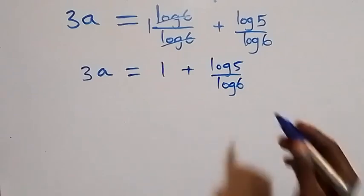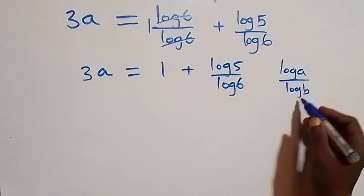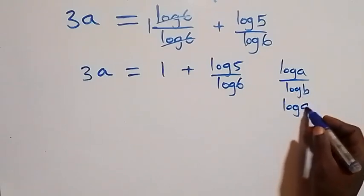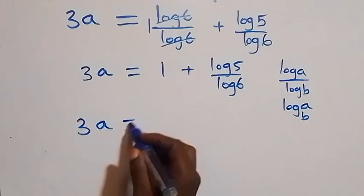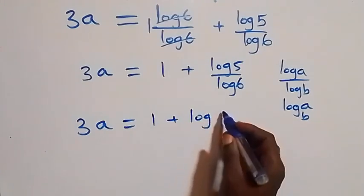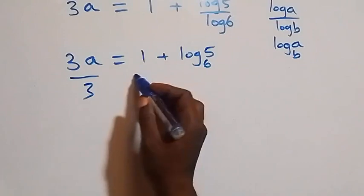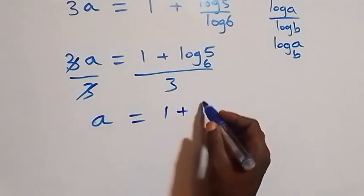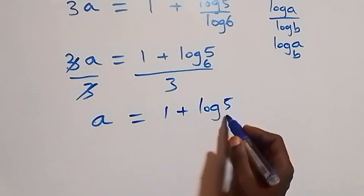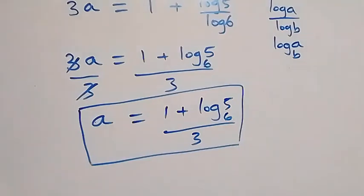By the change of base formula, log(5)/log(6) = log₆(5). So we have 3a = 1 + log₆(5). Dividing both sides by 3, we get a = (1 + log₆(5)) / 3. This is the solution to the given problem.